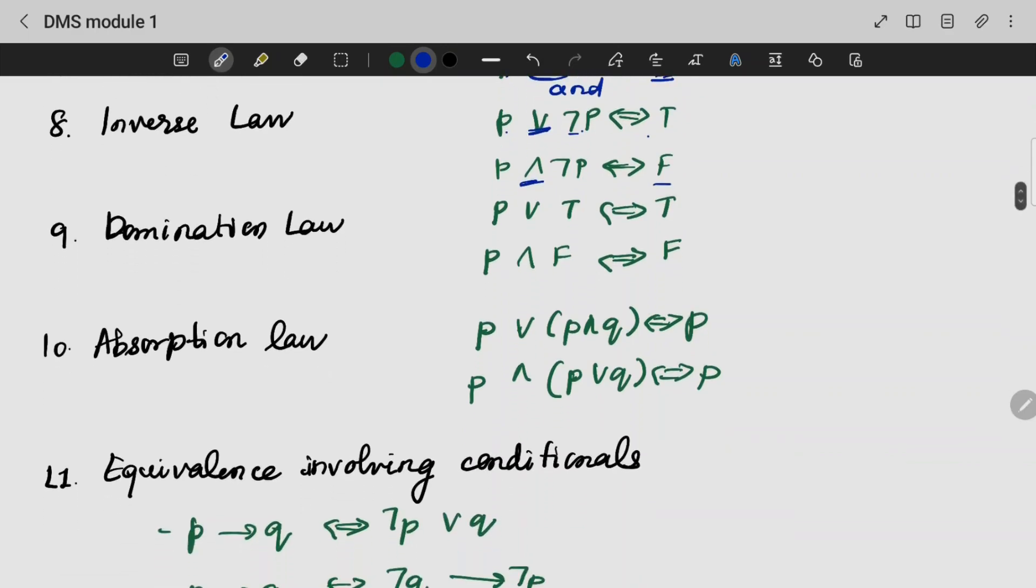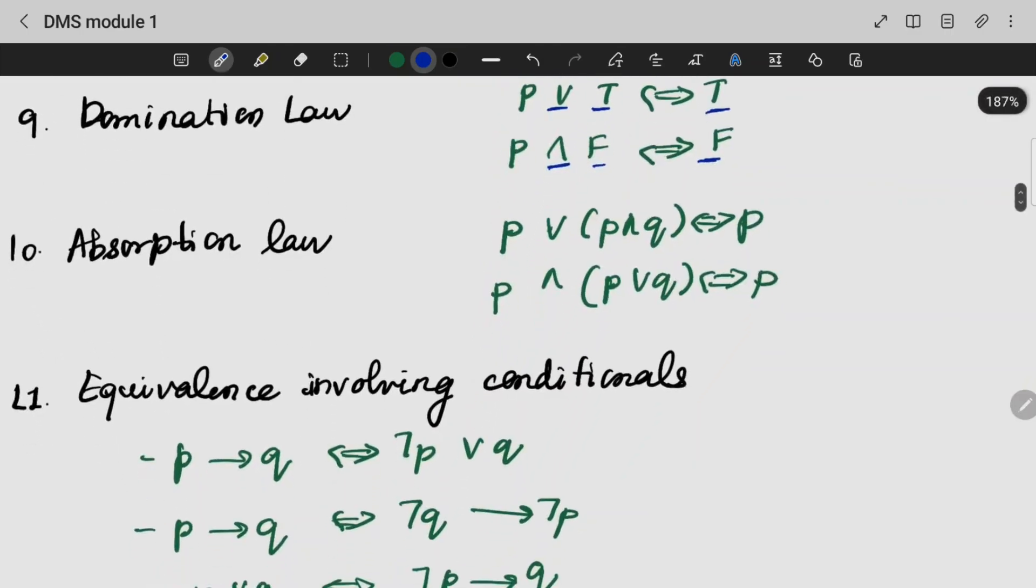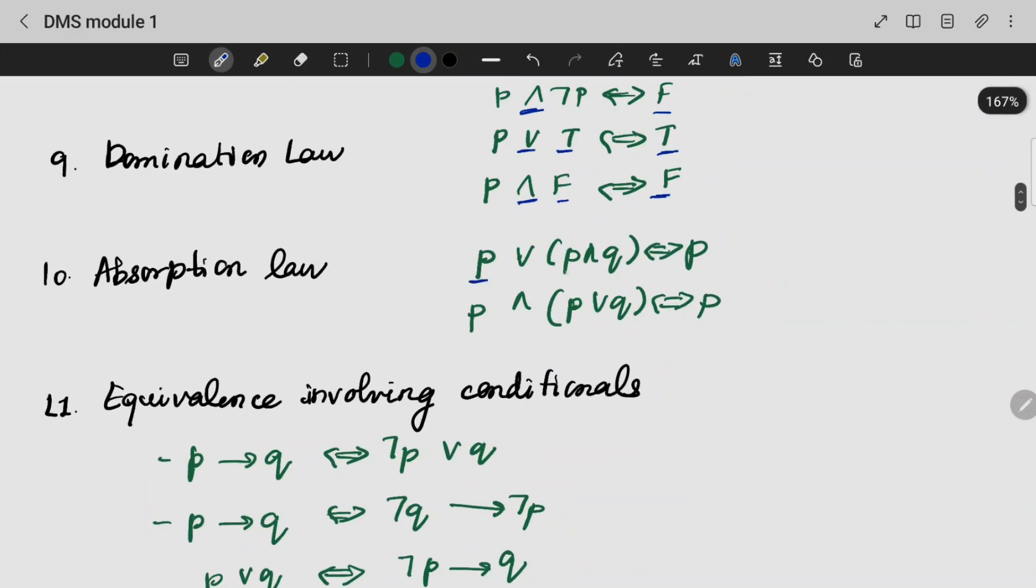Also, domination law. If we are giving it AND, and here, if we are giving OR, it will be true and we will be getting P.